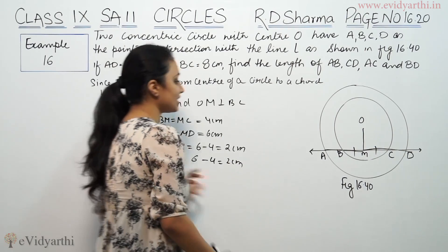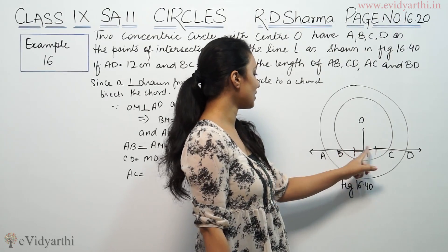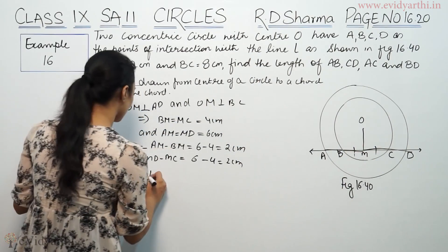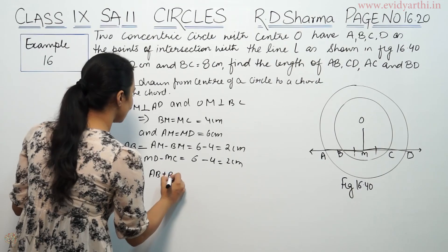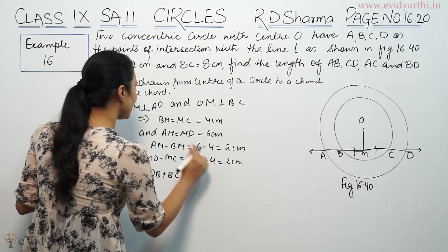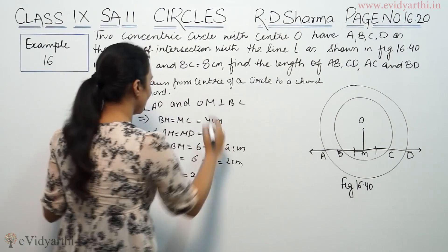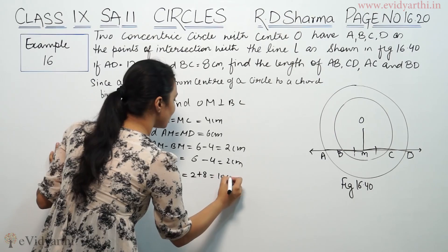Now AC, AC means AB plus BM plus MC, so AB plus BC. AB length is 2 and BC length is 8, so this will be 10 cm.